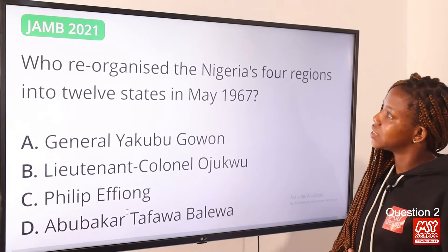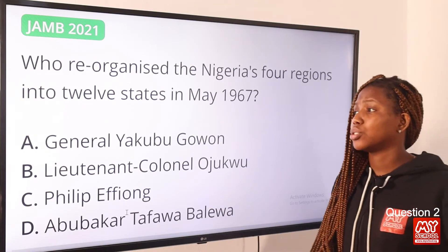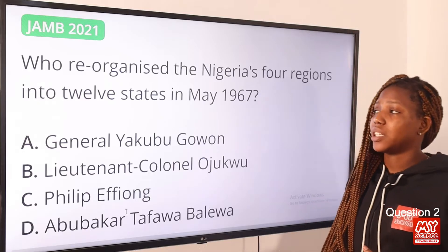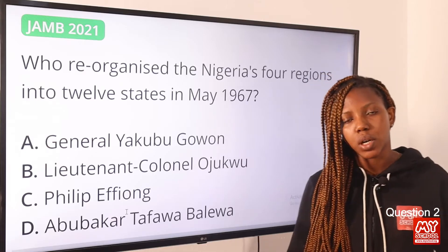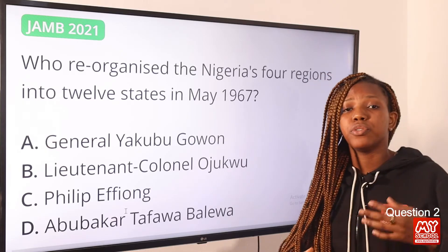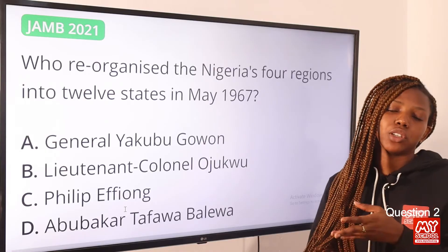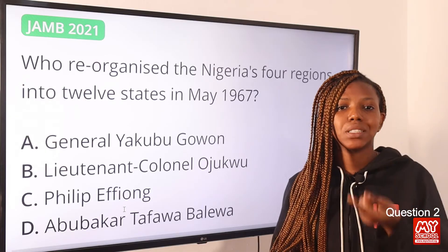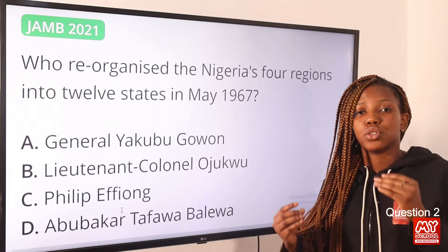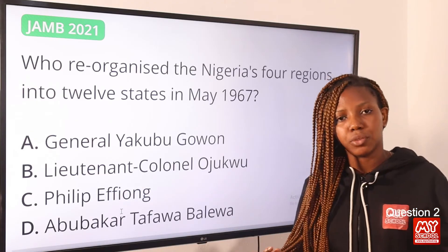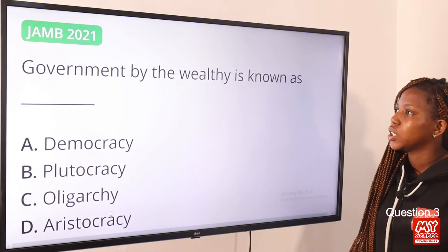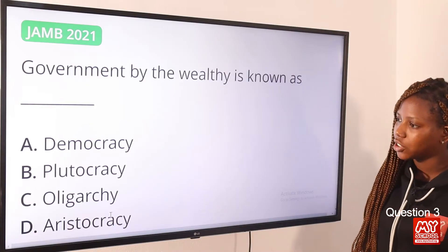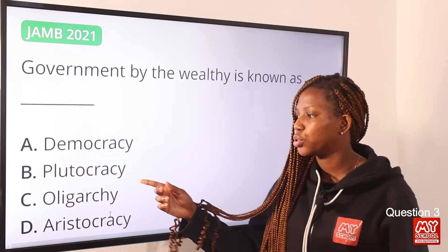Question two: Who reorganized Nigeria's four regions into 12 states in May 1967? The answer is General Yakubu Gowon. Out of the four existing regions — the North, East, West, and Midwest — Yakubu Gowon created 12 states. The answer is option A, General Yakubu Gowon.